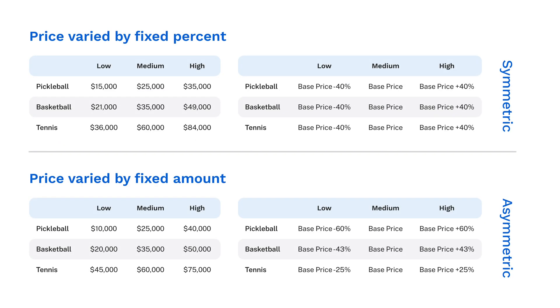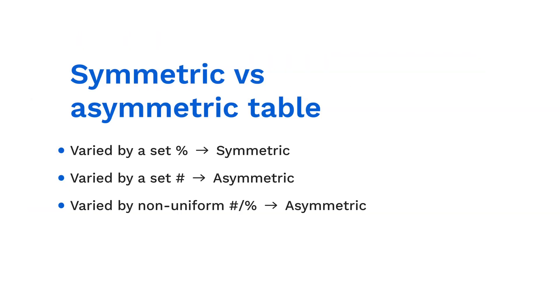Additionally, in our scenario we varied the levels of price up and down by a set percentage across the three levels of size — in this case 40% — leading to a proportional or symmetric conditional pricing table. If instead we had varied each level by an absolute fixed amount, such as $15,000, our pricing table would likely be asymmetric, which would require us to specify appropriate interaction effects to correctly fit the data.